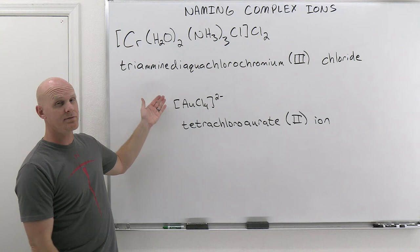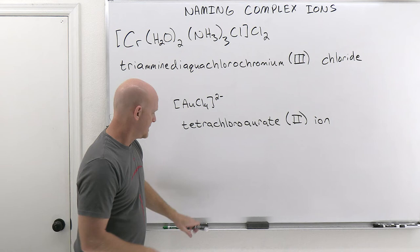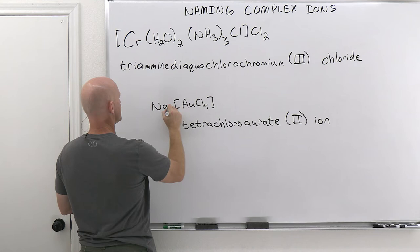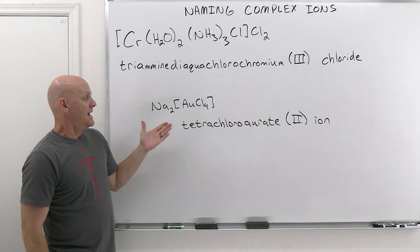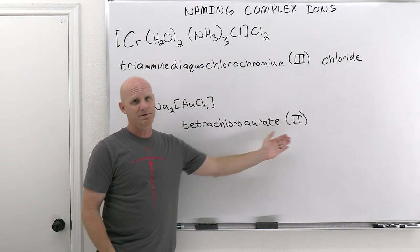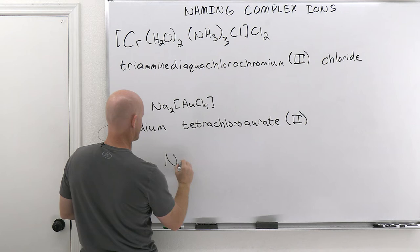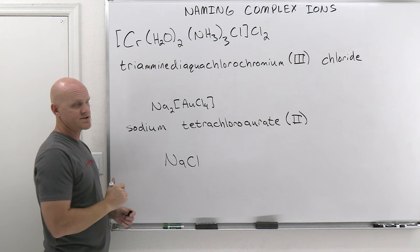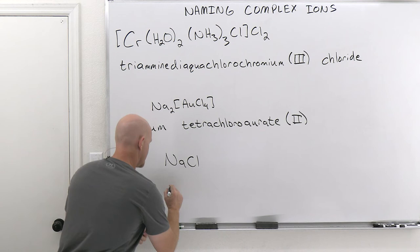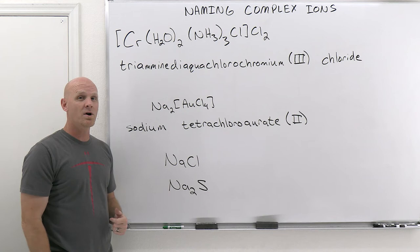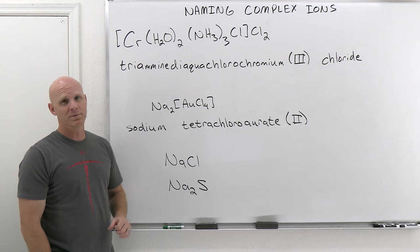We also named the complex anion as tetrachloroaurate(II) ion. Now we make it part of a coordination compound with sodium as the cation. For ionic compounds, we name the cation first and the anion second. Since the cation is just sodium — like in NaCl becoming sodium chloride — this compound is sodium tetrachloroaurate(II). The fact that there are two sodiums is implied by the charges and doesn't appear in the name.